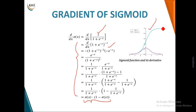Looking at the plot, the sky blue line represents the sigmoid function, and the purple waveform gives the plot of its derivative. You can see it forms a nice bell-shaped structure when you plot the derivative of the sigmoid function.